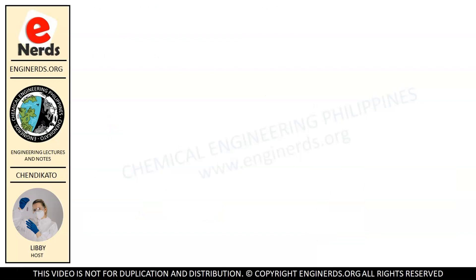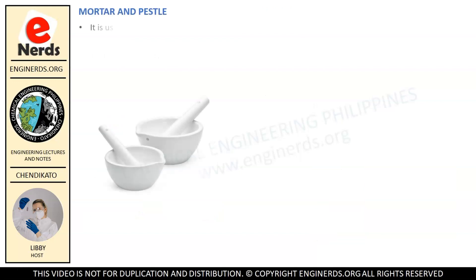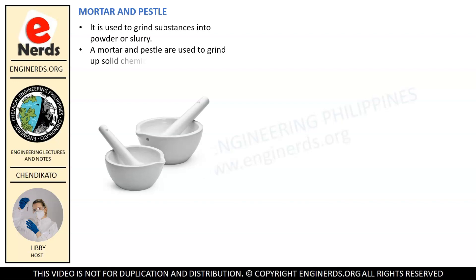Now let us talk about the mortar and pestle. It is used to grind substances into powder or slurry. A mortar and pestle are used to grind up solid chemicals into a fine powder and crush solids into smaller pieces.